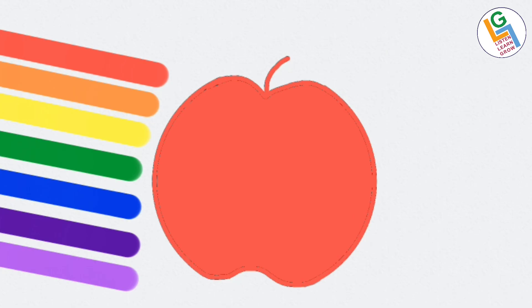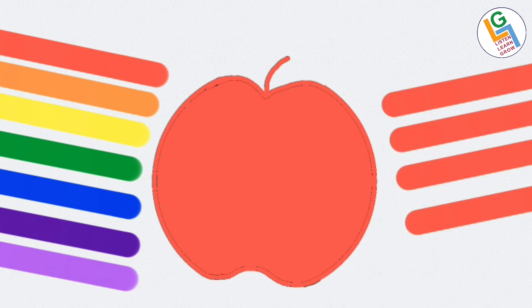The human eye absorbs the wavelengths of rays from objects and transforms them into color. For example, an apple is red because it absorbs all the other colors from white light, while red is reflected. Therefore, we perceive the apple as red. Now you've got some idea about color.